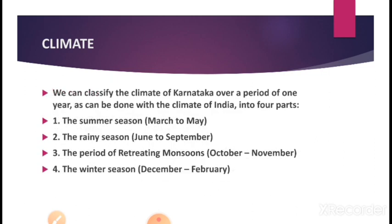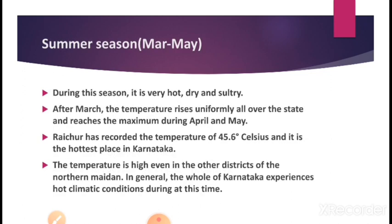The climatic seasons of Karnataka are divided into four parts over a period of one year: summer season, rainy season, the period of retreating monsoon, and winter season. Let me explain the first climatic season — summer season.